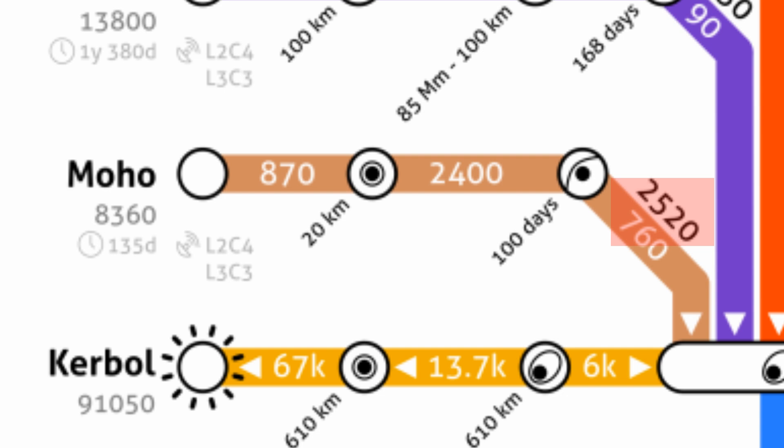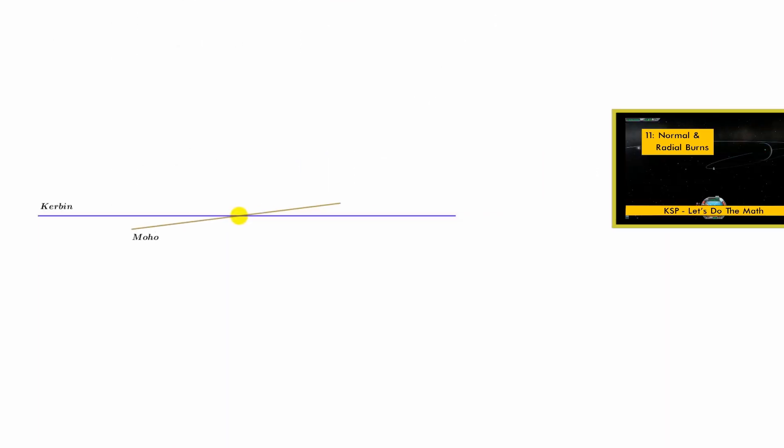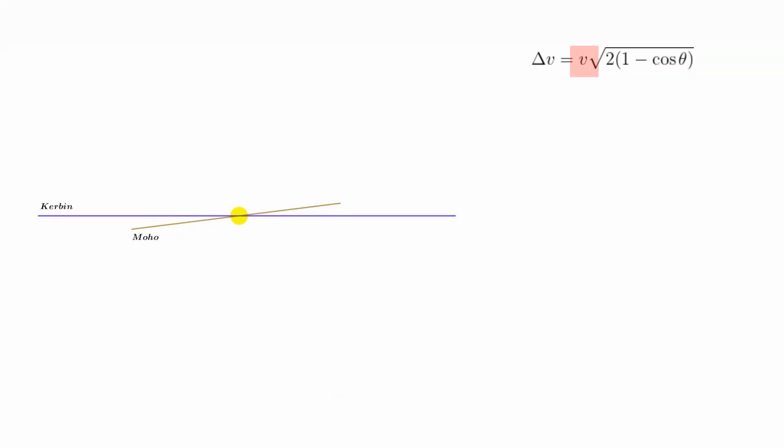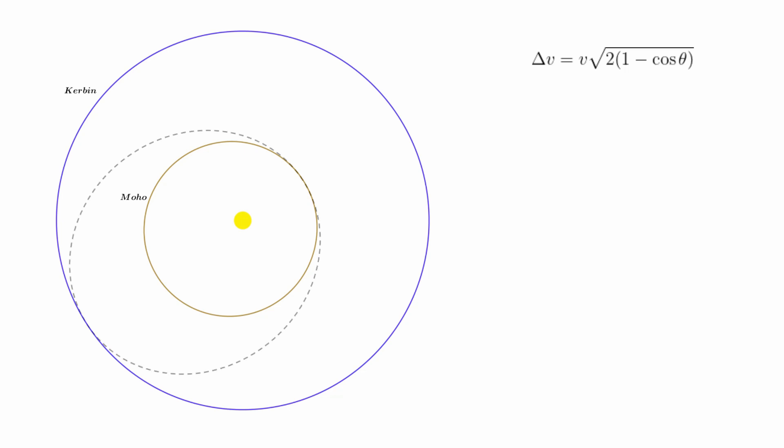I've talked about inclination changes before, and back in that episode I developed this formula for calculating the delta-V cost of a plane change where theta is the angle of the change you want to make and V is your current velocity. Moho has an inclination of 7 degrees, while Kerbin's is 0, so the plane change you would make to match inclinations is 7 degrees. Your velocity is constantly increasing as you fall along the elliptical path of your transfer orbit, and the higher your velocity, the higher the delta-V cost for the plane change. Your velocity will be highest when you reach Moho's orbit. Moreover, the closer to the sun you are, the faster your speed will be, so we're going to assume the worst case scenario of making the plane change at Moho's periapsis.